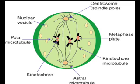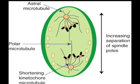In metaphase, the spindle forms and the chromosomes take up positions on the metaphase plate, an imaginary plane in the middle of the cell halfway between the two poles. They are located on the outside spindle. Each double-stranded chromosome is attached to a spindle microtubule at its centromere. In anaphase, the centromeres of each chromosome separate. Each sister chromatid now has its own centromere and is called a chromosome, so there are now twice as many chromosomes as there were during metaphase.